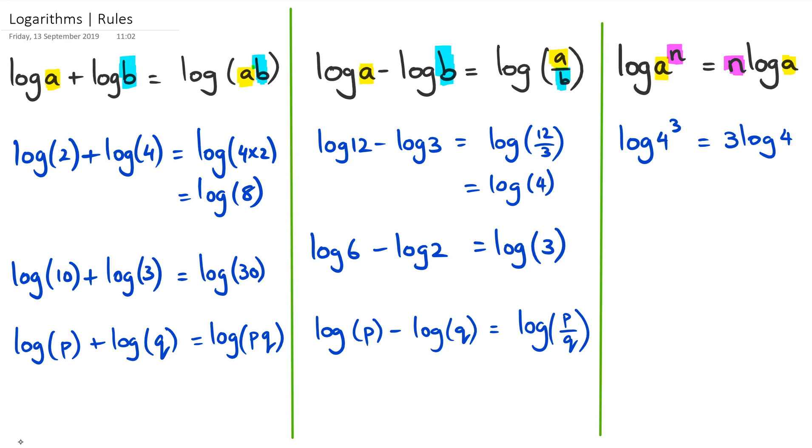That's basically it. Or if we want to go backwards, say for example if we have 2 times log 6, then we can actually rewrite this as log 6 squared.